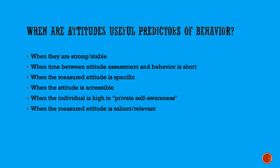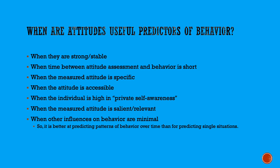When the measured attitude is salient or relevant, it's a better predictor. This one's kind of obvious, but it needs to be said. If I assess your attitudes toward ice cream and then try to use that to predict who you're going to vote for in a presidential election, the attitude isn't going to be very useful because attitude toward ice cream is just not relevant to the choice of a presidential candidate. The attitude needs to be related in some way to the thing you're trying to predict.